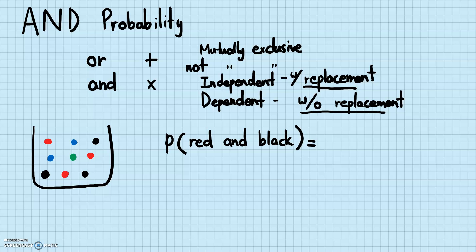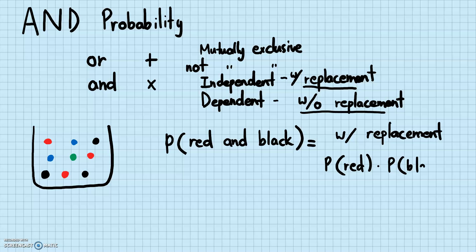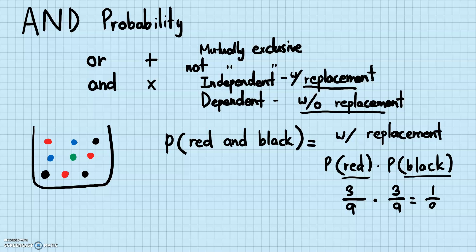Probability of red AND black with replacement — this is the independent case. So it's the probability of picking a red times the probability of picking a black. With replacement the first pick does not affect the second pick. The probability of red is 3/9 and the probability of black is 3/9. Multiplying: 3/9 × 3/9 = 1/3 × 1/3 = 1/9.